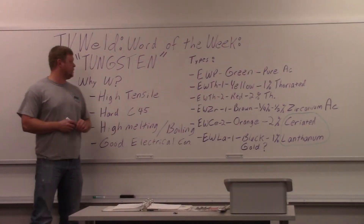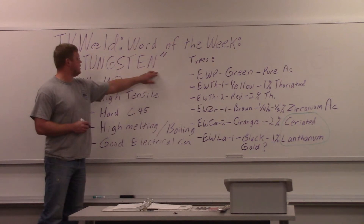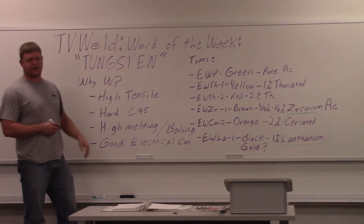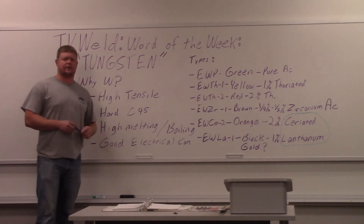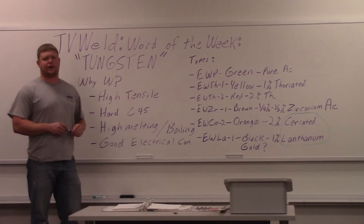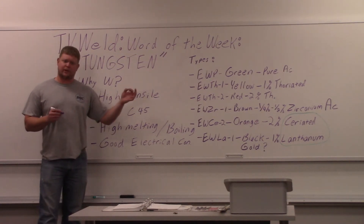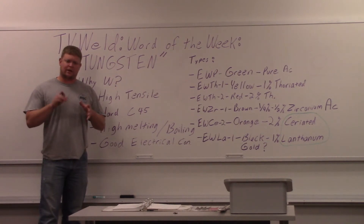This week's word of the week is tungsten. This is the material used in gas tungsten arc welding as the electrode. It's a little different from other welding processes because it's not consumed — you add your filler manually. The tungsten puts down a super concentrated arc that melts the base metal as well as the filler metal, and that's what makes the weld.